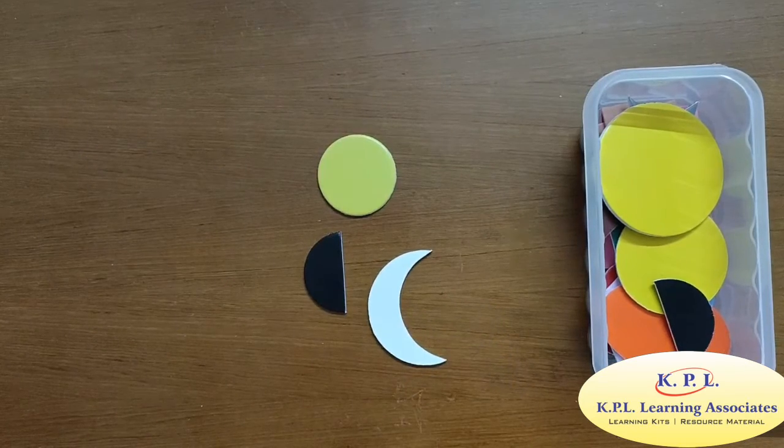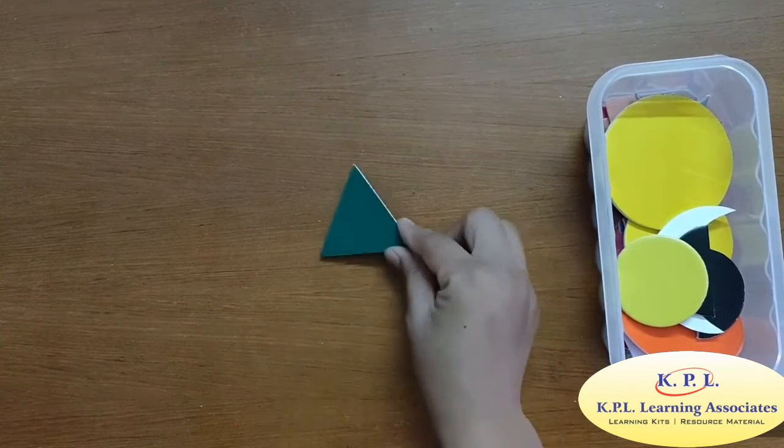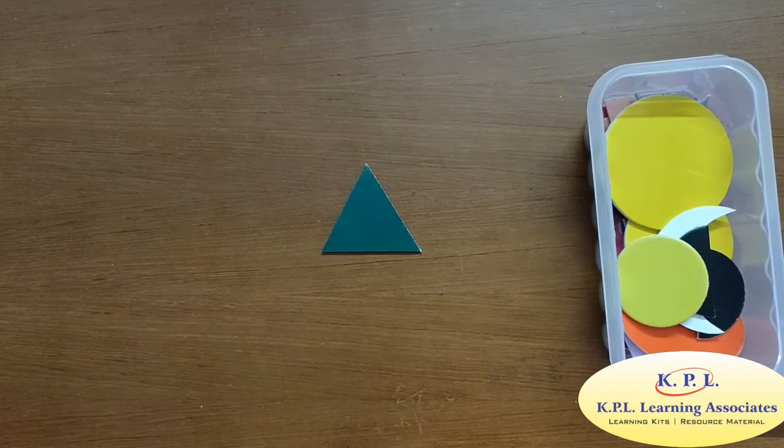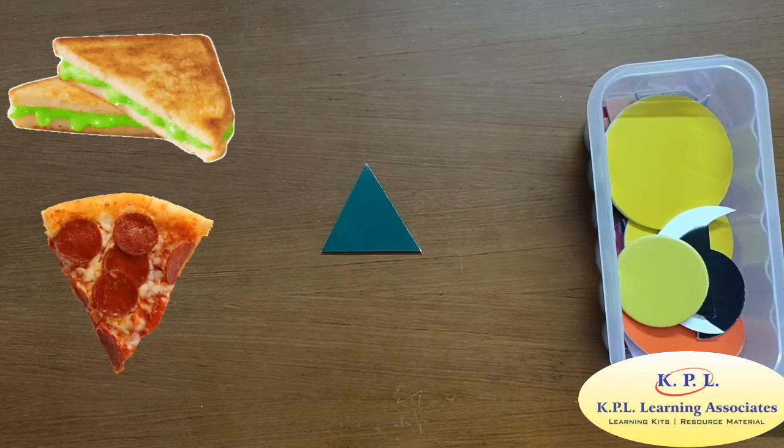We have more shapes to play. This is a triangle. It has three sides and three corners. Examples of triangle are sandwich, pizza.